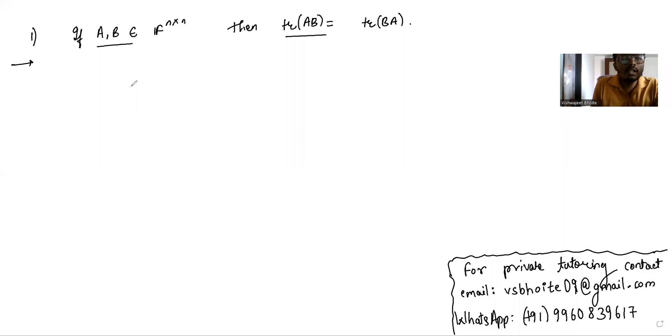We have been given that A and B are n by n matrices. We have to prove that trace(AB) is equal to trace(BA).